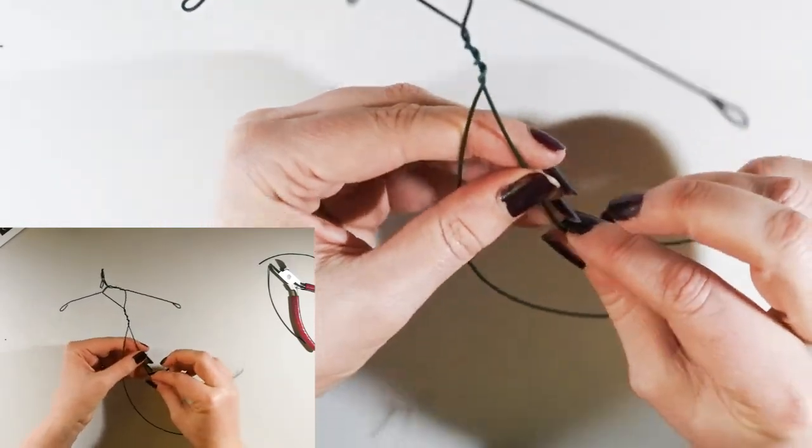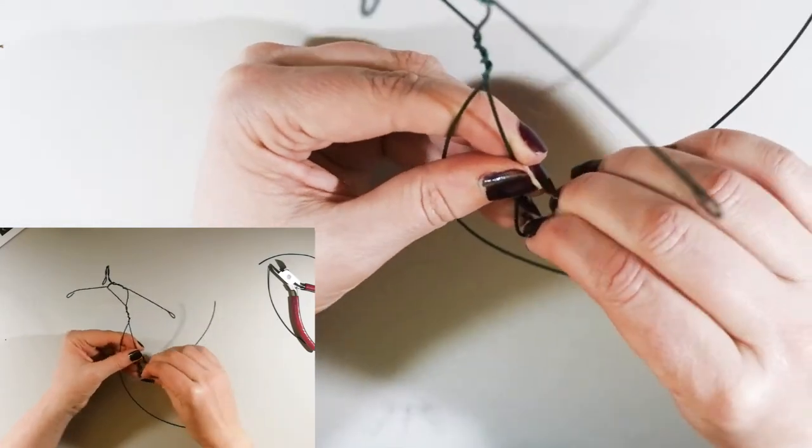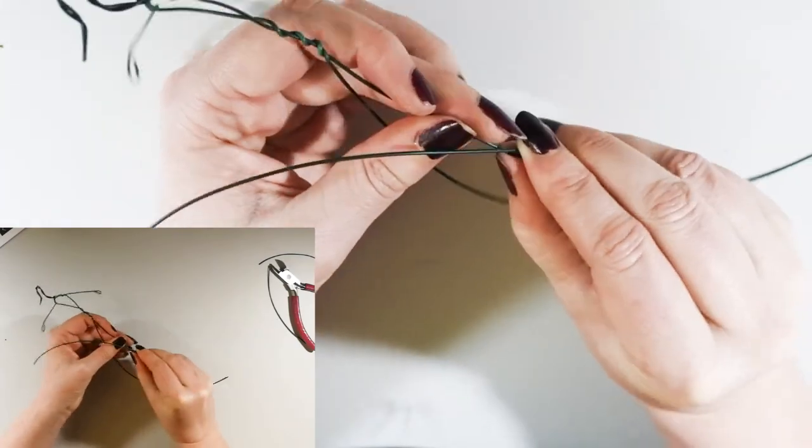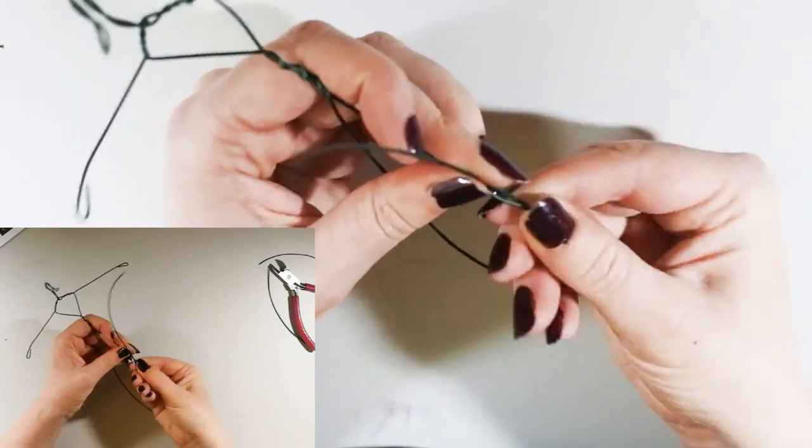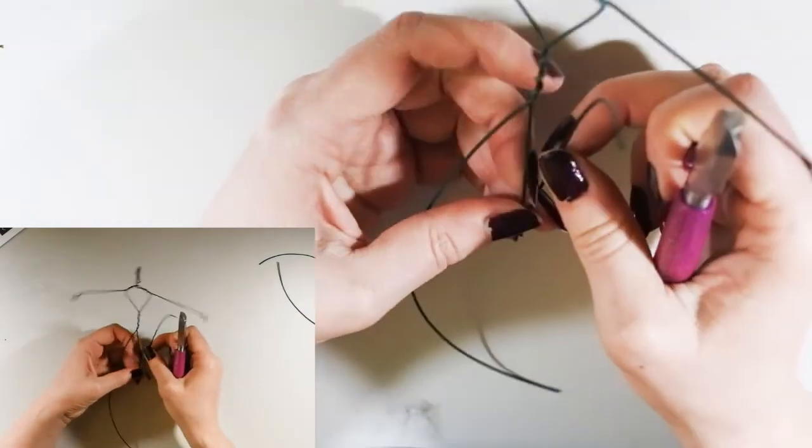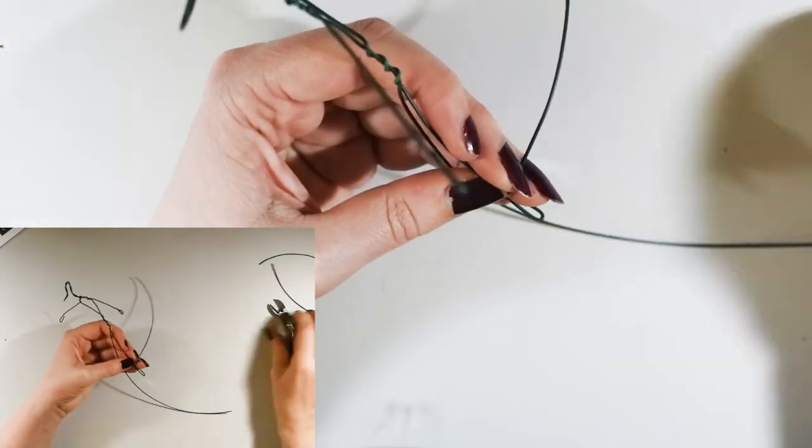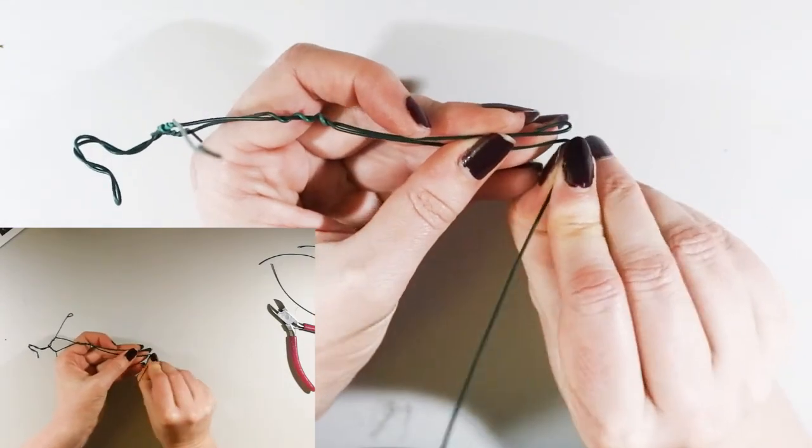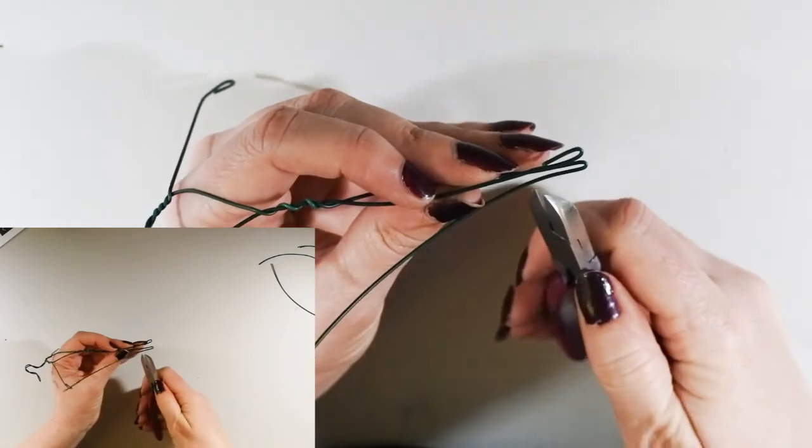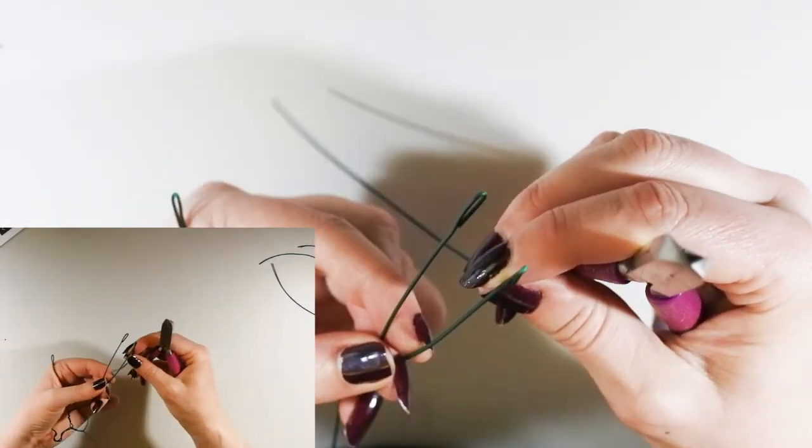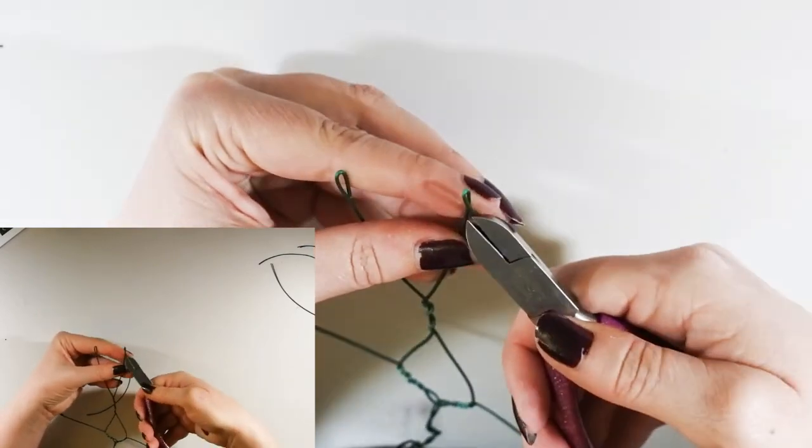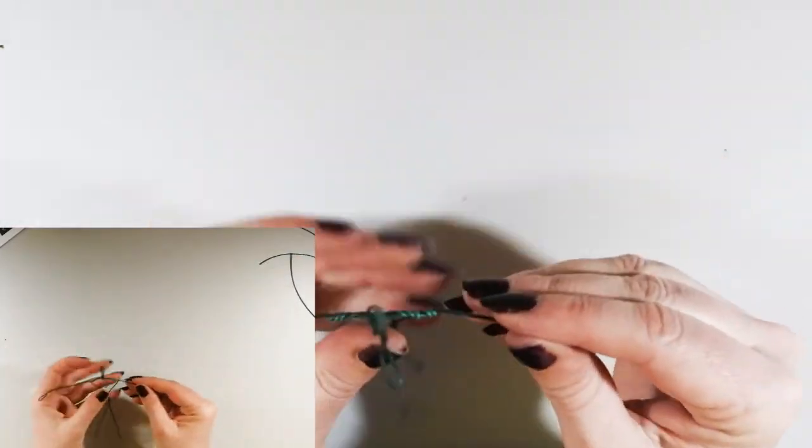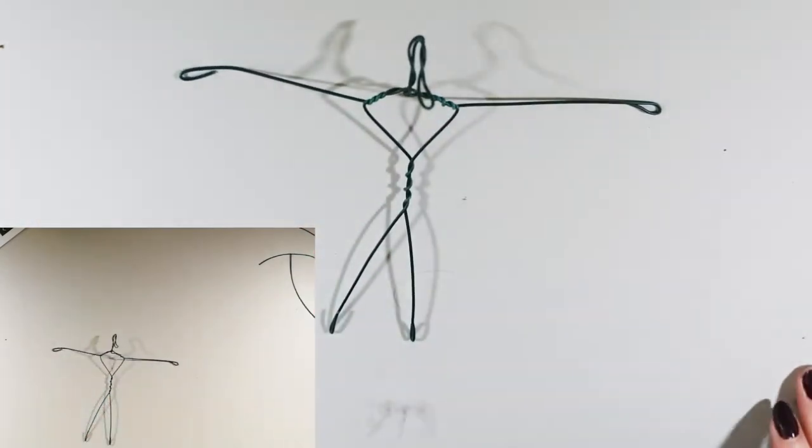And the same with the legs. Because there's going to be a tutu, the legs probably don't need to be as long as you think they do. But you can make them longer and it gives it an elegant look. I'm just going to fold out some feet. And that's your armature ready for wrapping.